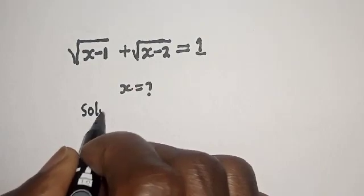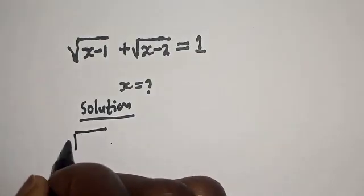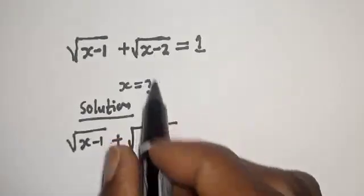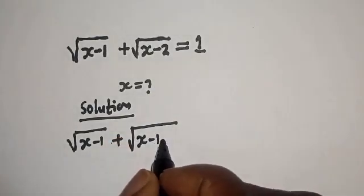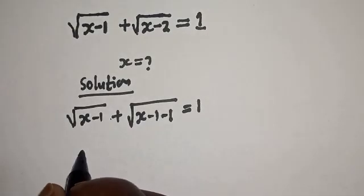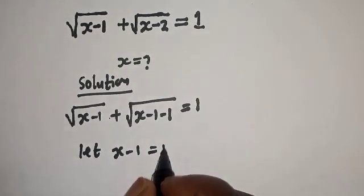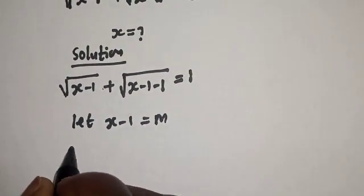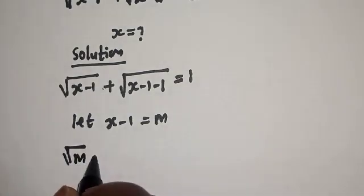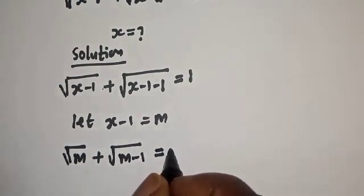Solution. We have square root of x minus 1 plus square root of x minus 2 is equal to 1. Let x minus 1 equal m, so this becomes square root of m plus square root of m minus 1 is equal to 1.